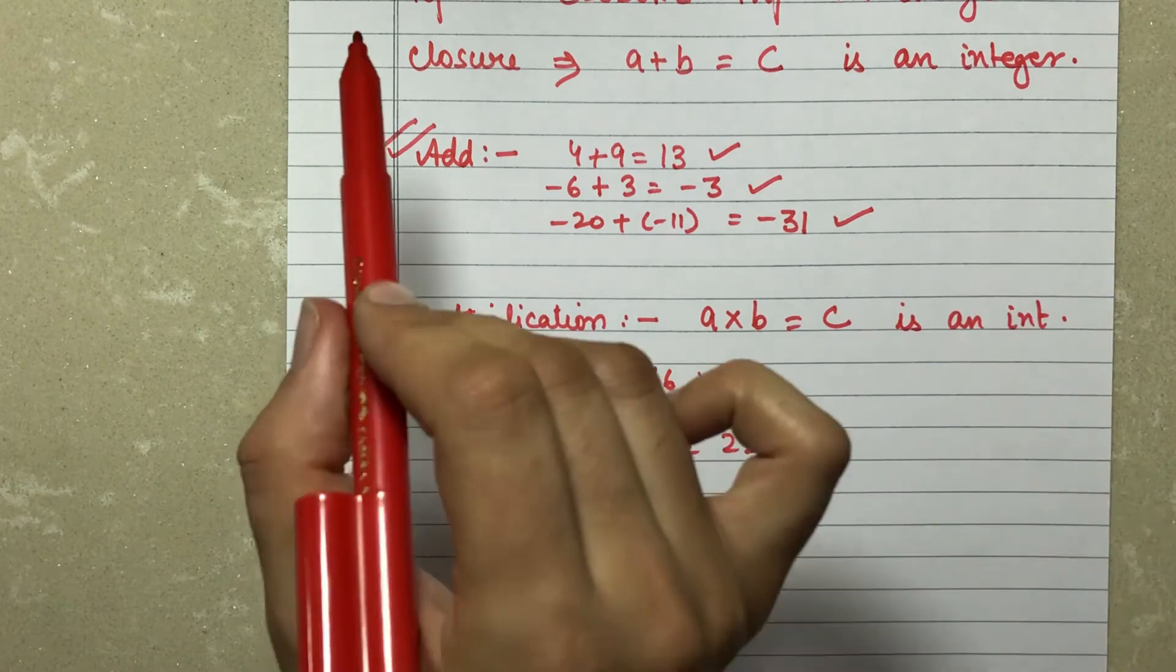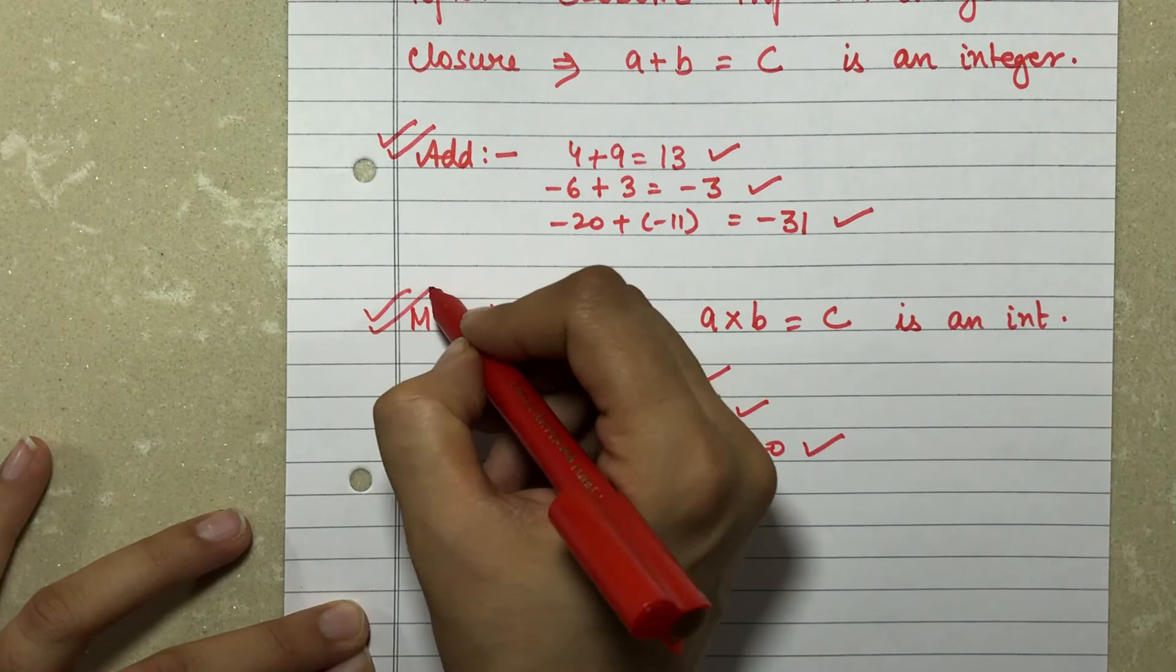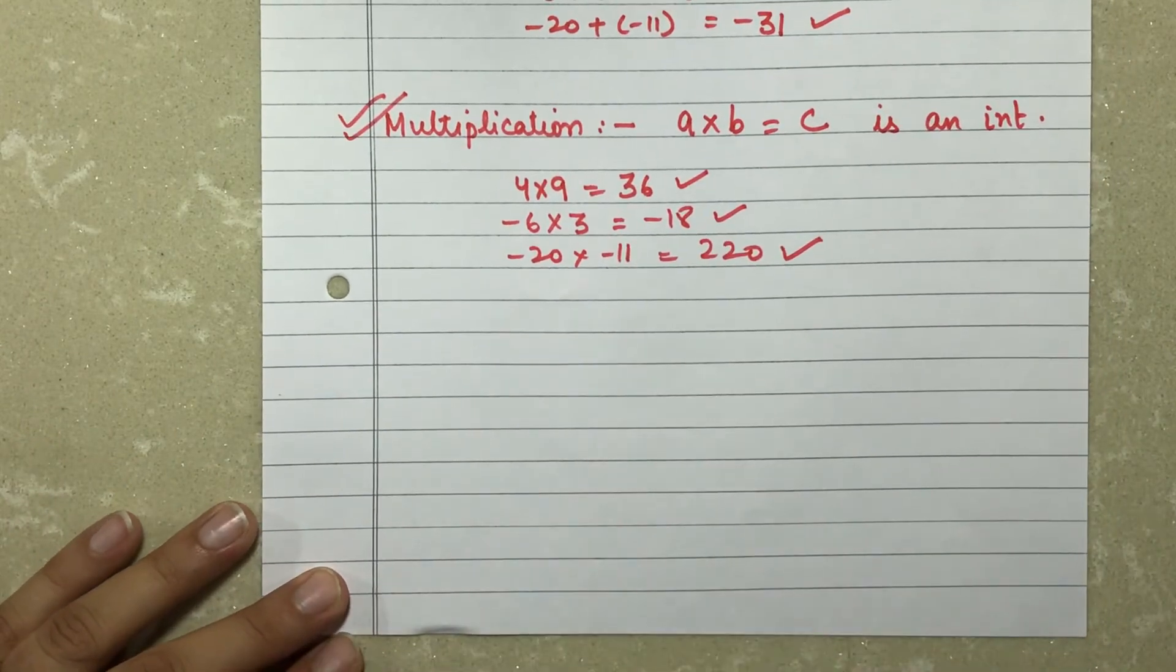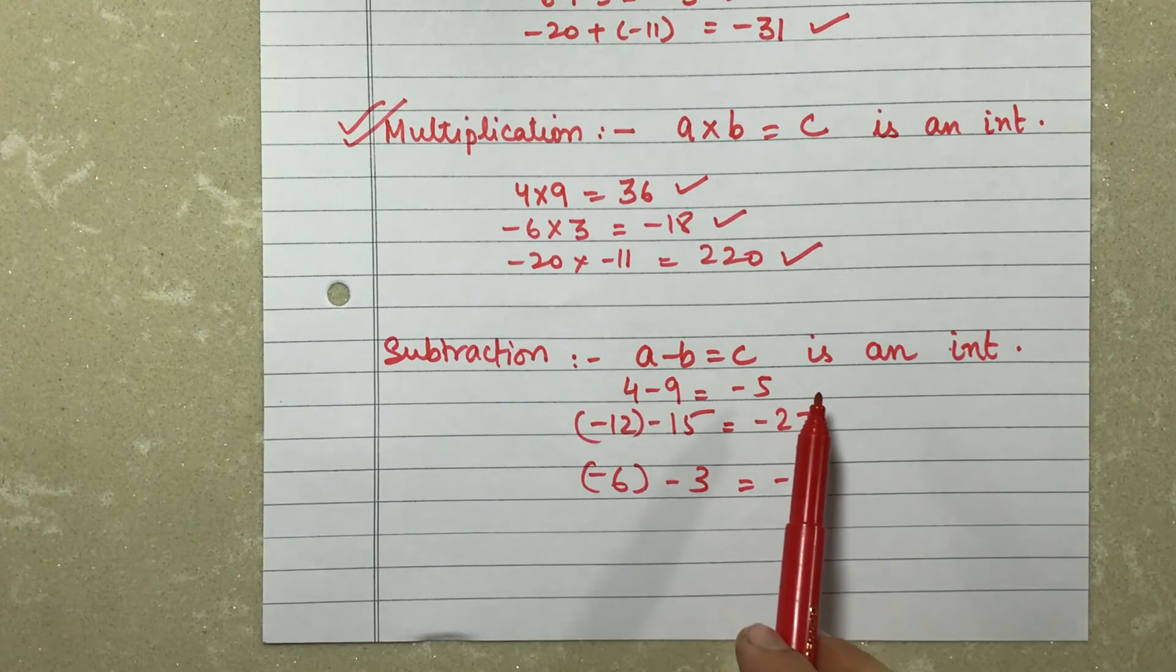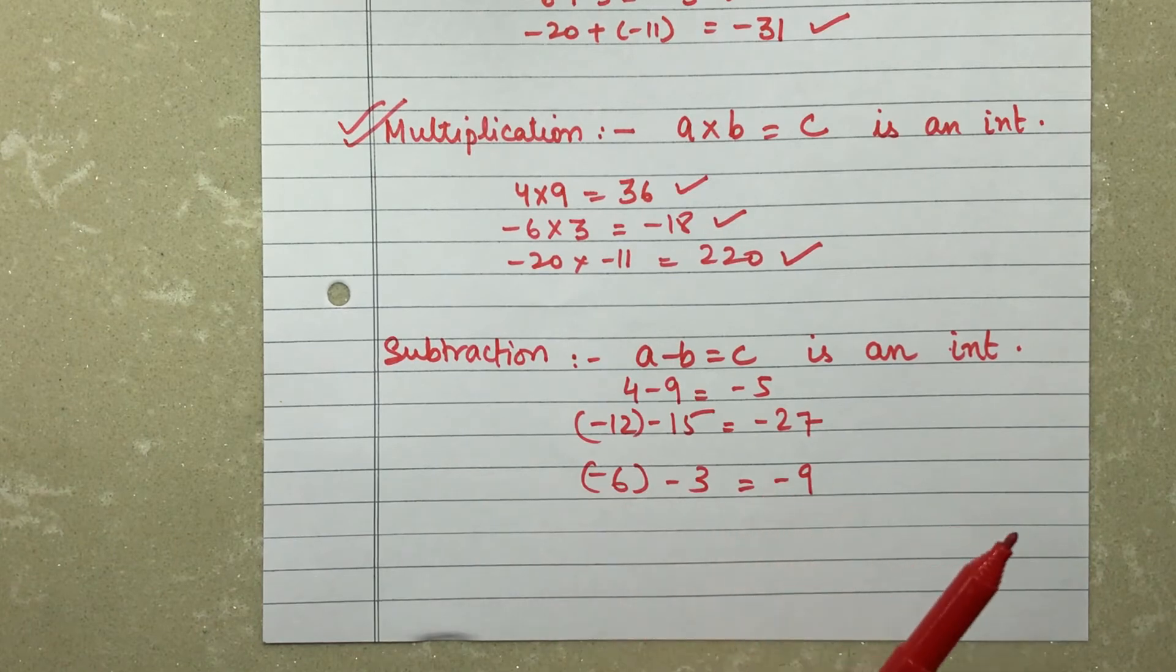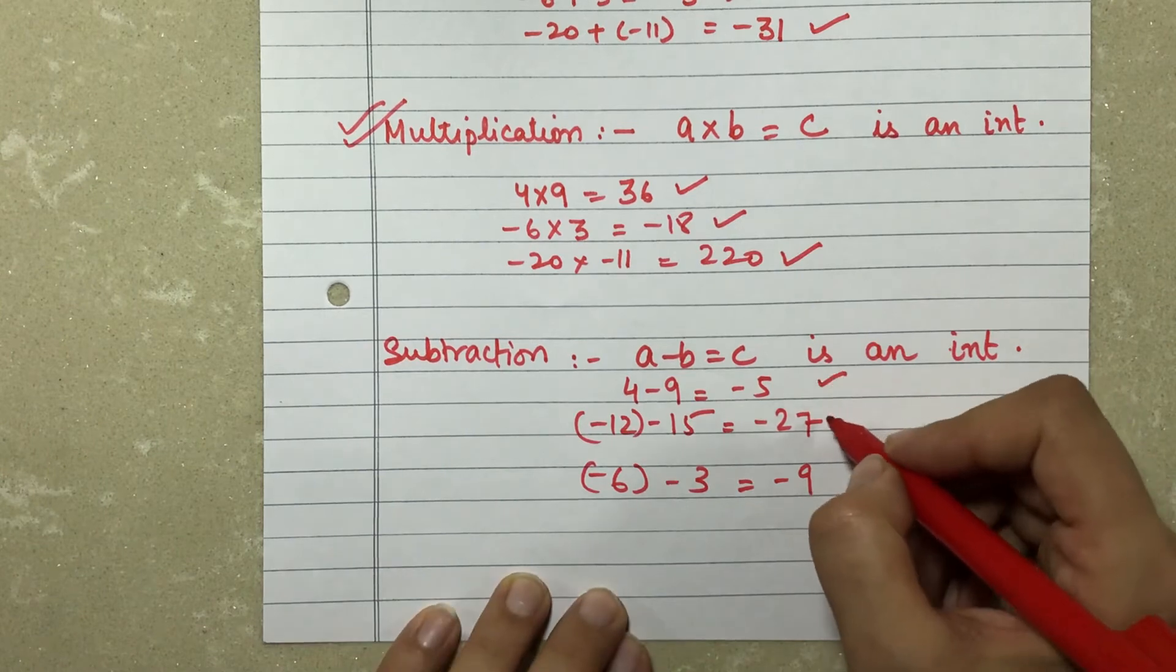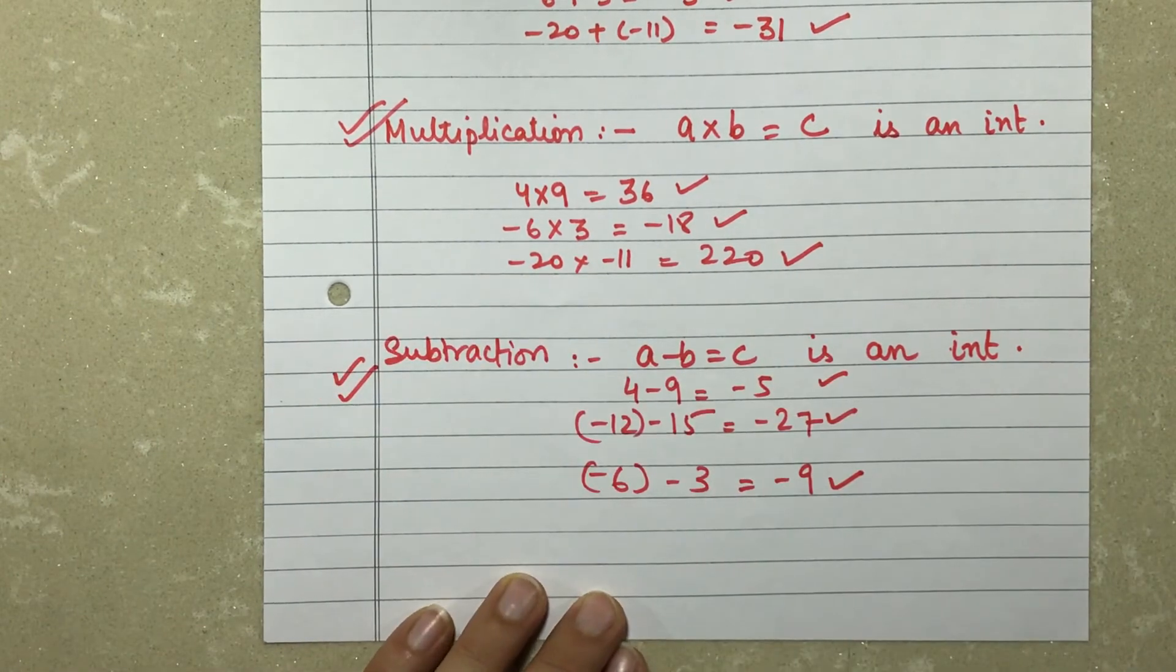So when all of them are integers, that means my closure property stands true for multiplication as well. Now let's check for subtraction. For subtraction, let's see it quickly because we already know what the closure property is. 4 minus 9 gives me minus 5. Minus 12 minus 15 gives me minus 27. Minus 6 minus 3 gives me minus 9. Again, minus 5, minus 27, and minus 9 all are integers, and so the property stands true in subtraction also.